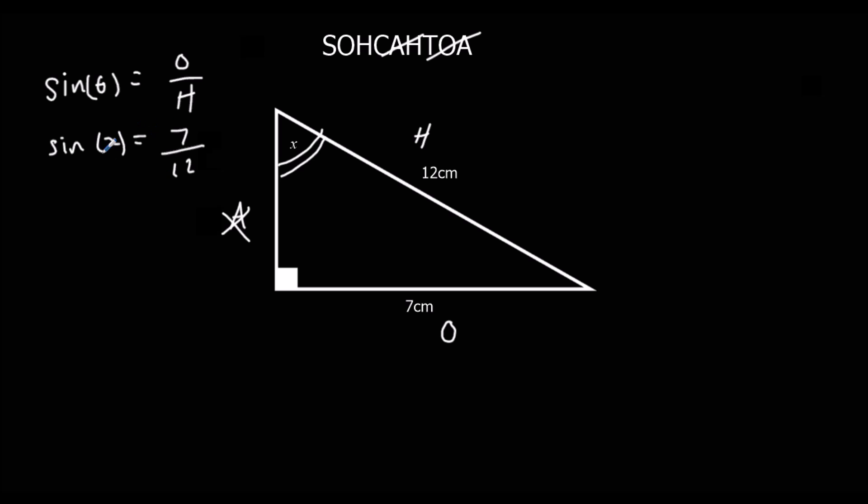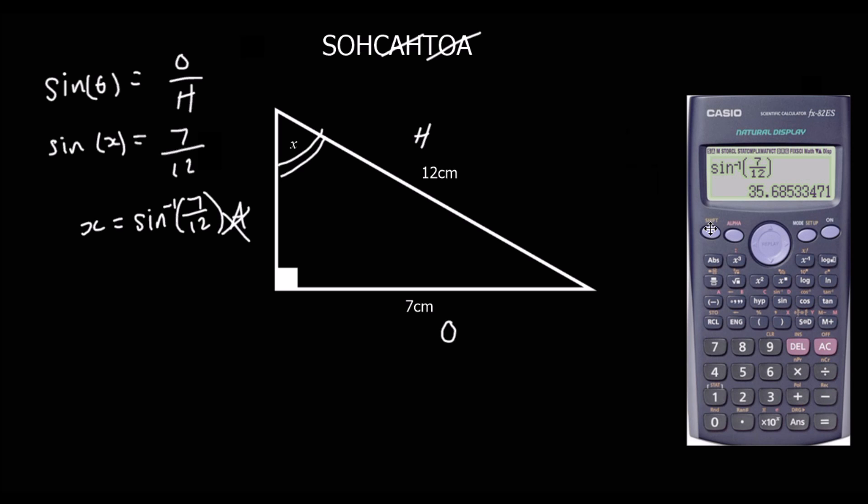So, this time, we need to get sine away from x. What we have to do is we have to do the opposite of sine, the inverse operation to sine, which is, well, we shift sine on the calculator. So, it's sine minus 1, so that shifts in 7 over 12. On the calculator, you press shift, then sine, shift sine. You see the little sine minus 1 above it?